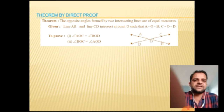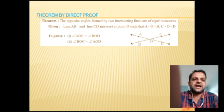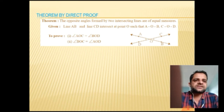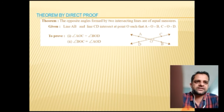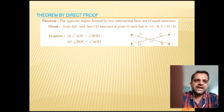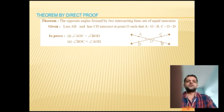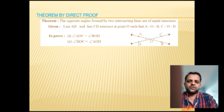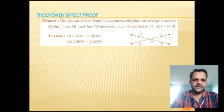In this theorem, line AB and line CD intersect at point O. We want to prove that angle AOC equals angle BOD, and angle BOC equals angle AOD.